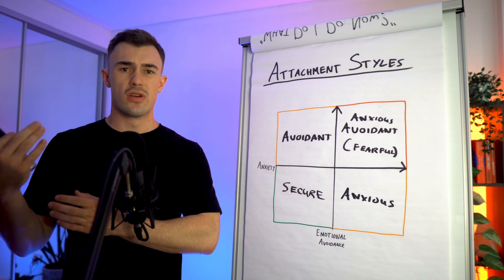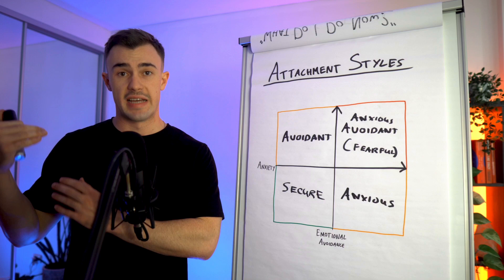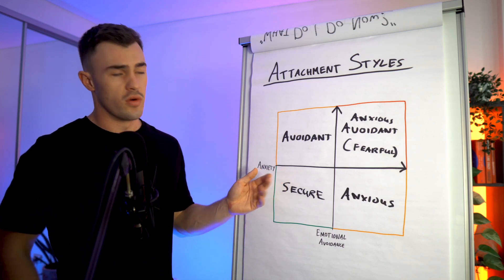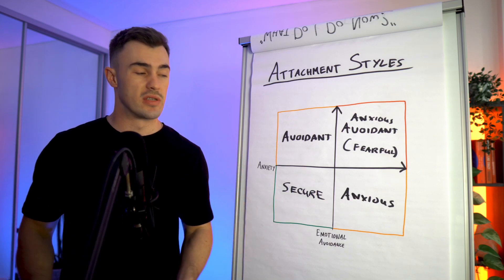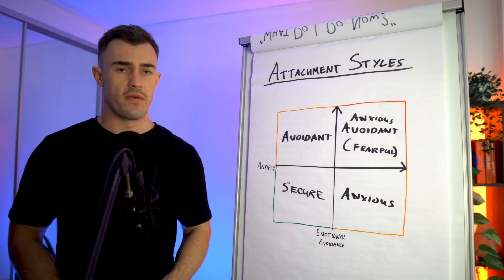So you have to become aware of the fact that you are an avoidant type and that you do avoid conflict, not even conflict, but you avoid the emotions attached to conflict. And of course the emotions attached to connection and to commitment with someone. And so you have to become aware of that.